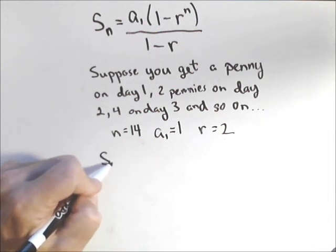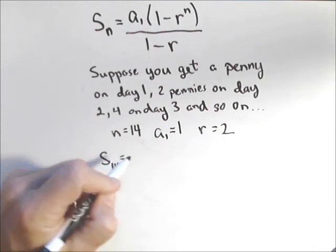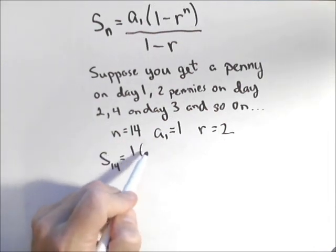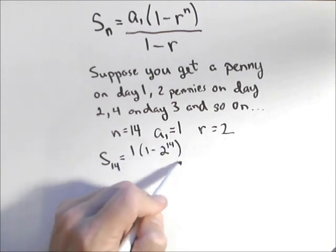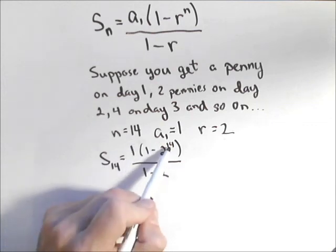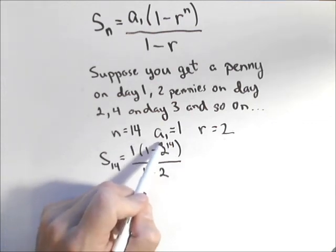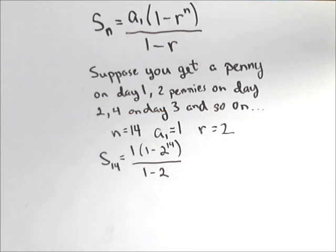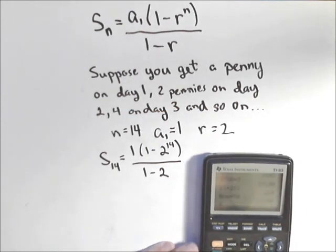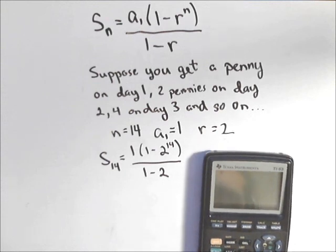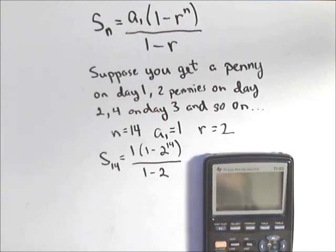So setting this up, S sub 14 equals one times one minus two to the 14, over one minus two. Now be sure that 14 is right on the two. A lot of people will put the parentheses before the 14, which will make it wrong. We can put this all in at once if we're careful so that we can make any adjustments on the fly.